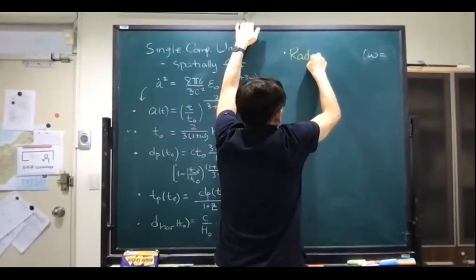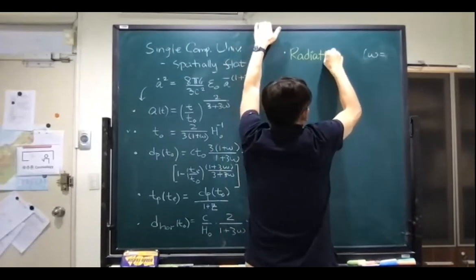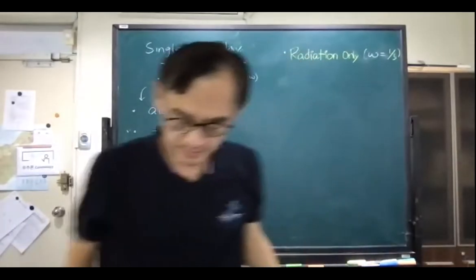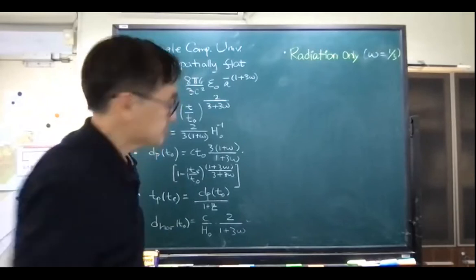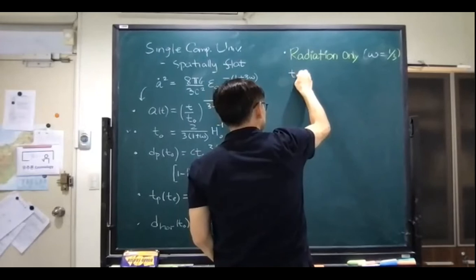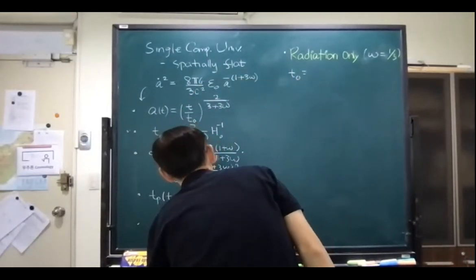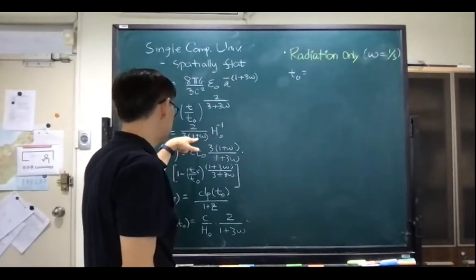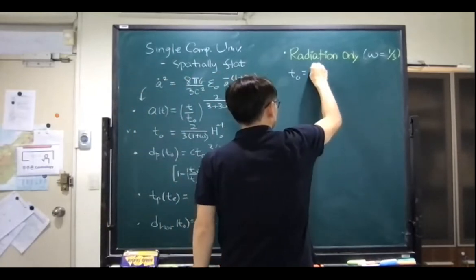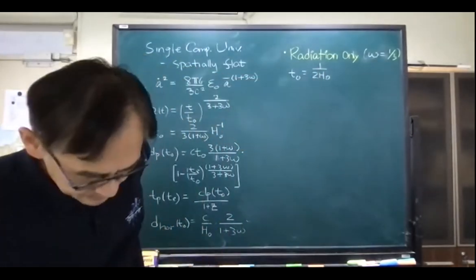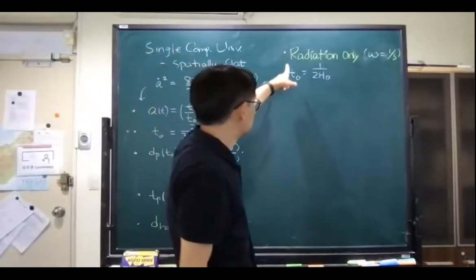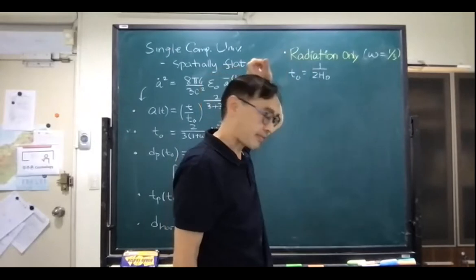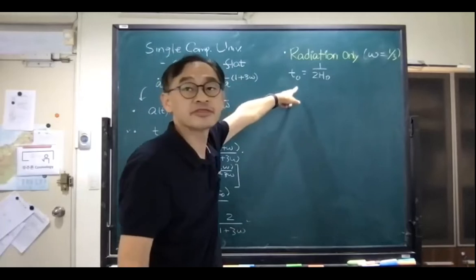Now radiation. Let's start with the age of the universe. One plus one-third is four-thirds; three is cancelled. I have one over two H₀. So the age of the universe in a radiation-only universe is one-half of the Hubble time. Matter-only was two-thirds; now it's only one-half.